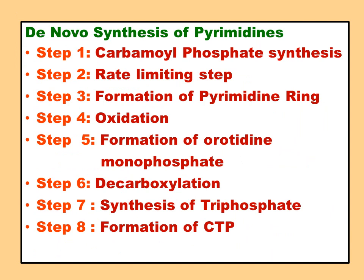The steps in de novo synthesis of pyrimidines — a study tip: step one is carbamoyl phosphate synthesis; step two is the rate-limiting step; step three is formation of the pyrimidine ring; step four is oxidation; step five is formation of orotidine monophosphate; step six is decarboxylation; step seven is synthesis of UTP; and step eight is formation of CTP. This is much simpler than the de novo synthesis of purines.